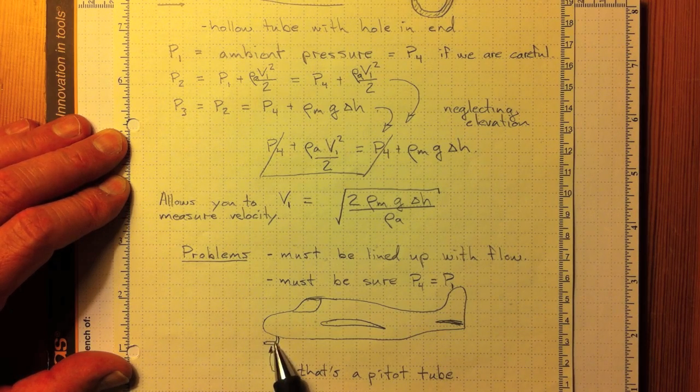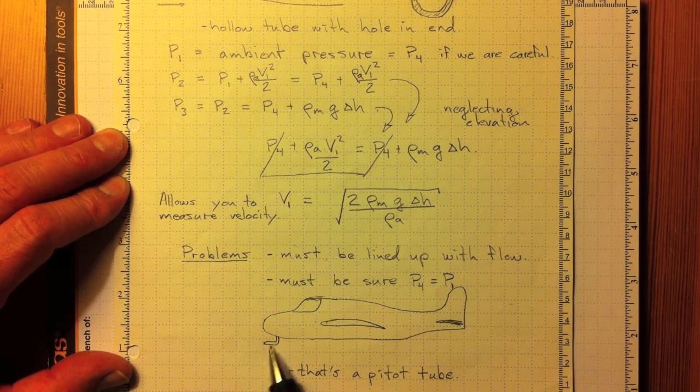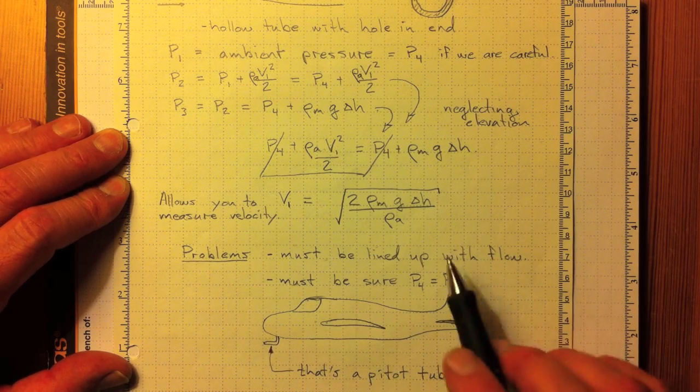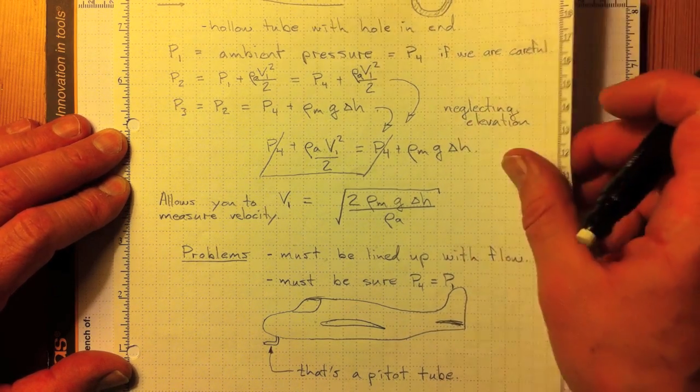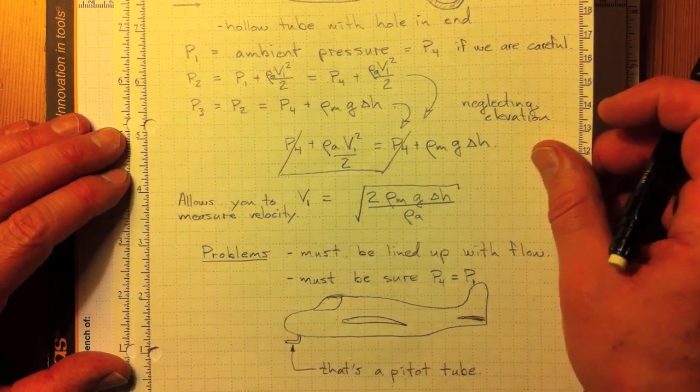So, when you see on an aircraft, this tube sticking out just down below the nose of the aircraft, that is a pitot tube and it's measuring the velocity, the air speed of the aircraft using exactly this approach.